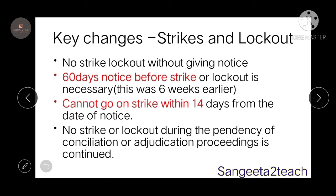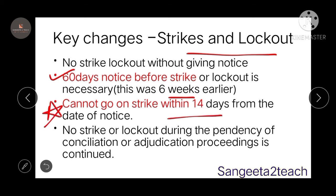Key changes in strikes and lockouts: no strike or lockout can be called without giving notice. Previously, strike notice was required to be given six weeks in advance, but now a 60-day notice is mandatory before a strike or lockout. Additionally, no one can go on strike within 14 days of giving such notice. No strike or lockout is permitted during the pendency of conciliation or adjudication proceedings.